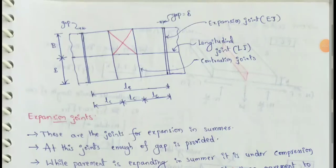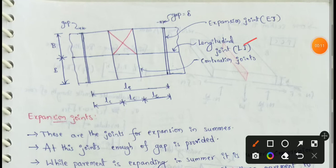Next topic: joints in rigid pavement. We have two types of rigid pavement joints. The first one is longitudinal joints, and the second one is lateral joints.